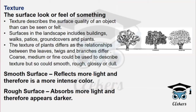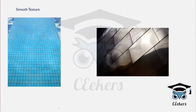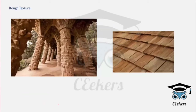Next is texture — the surface look or feel of something. You can build a particular landscape using different buildings, pathways, ground covers, etc. Texture types include fine texture, medium texture, and coarse texture. A smooth surface will reflect the color of light, while a rough surface will absorb the color of light.